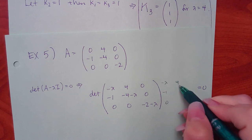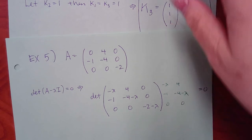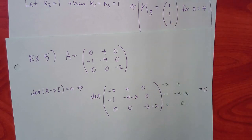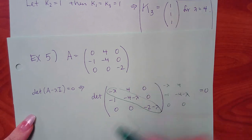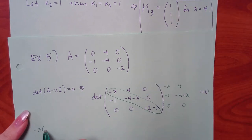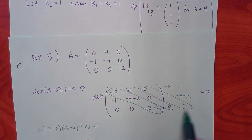Using the diagonal multiplication method (not the other method which is much longer), go in the positive diagonal direction: negative lambda times all three entries — the others hit a zero giving zero. Going in the negative diagonal direction: two diagonals give zero; one gives negative 4 times (negative 2 minus lambda).